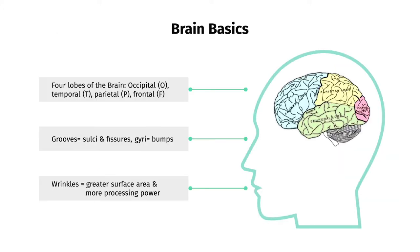The brain can be divided into four regions: the occipital lobe for vision, the temporal lobe for hearing, the parietal lobe for sensory and spatial information, and the frontal lobe for higher-level cognitive information. The brain also has sulci, or small grooves, fissures, or large grooves, and bulges between them called gyri. These make the brain look wrinkled, but this gives the brain a greater surface area, and thus higher processing power.